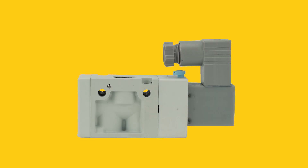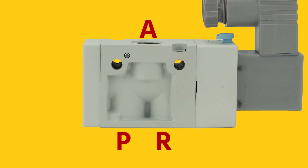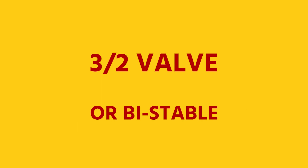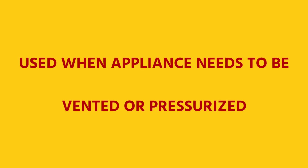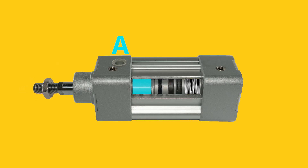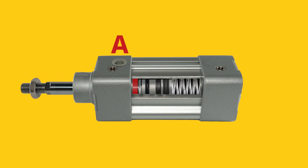A three/two-way valve has three ports and two states. These valves can be normally open, normally closed, or bistable. They are used when your appliance needs to be either vented or pressurized. An example is a single acting cylinder. The valve fills the cylinder through one port but also vents the cylinder afterwards through the same port to realize a new working stroke.